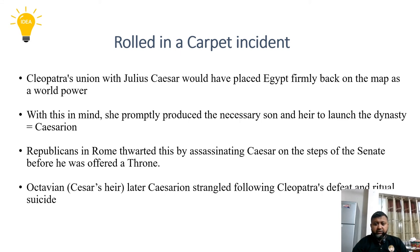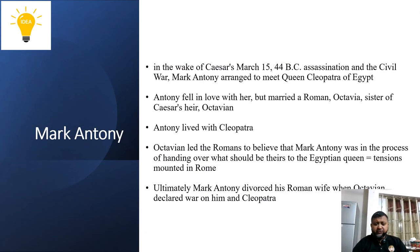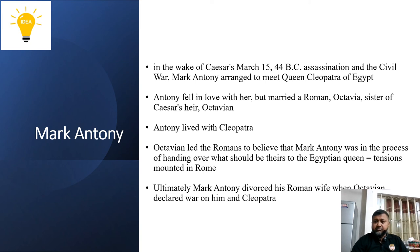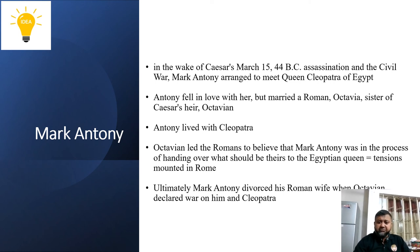Republicans in Rome thwarted this by assassinating Caesar on the steps of the Senate before he was offered a throne in Rome. Octavian, Caesar's heir, later had Caesarean strangled following Cleopatra's defeat and her ritual of suicide. So in the scene came Mark Antony — Mark Antony was the grandnephew of Caesar. With so much happening, Cleopatra met Mark Antony and fell in love. Although Mark Antony was married to Octavian's sister, Octavian took revenge, and in the face of defeat, Mark Antony and Cleopatra committed suicide.